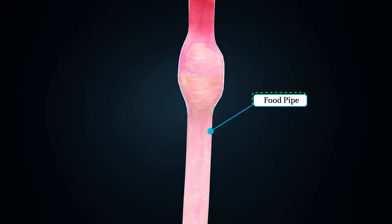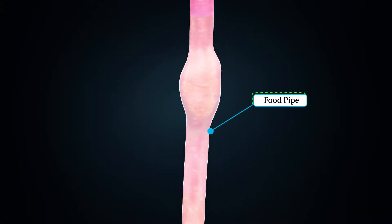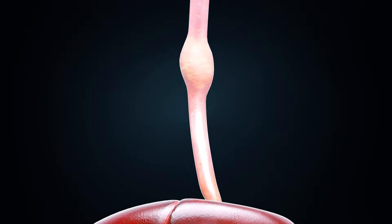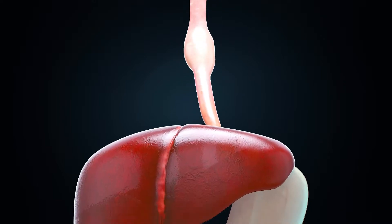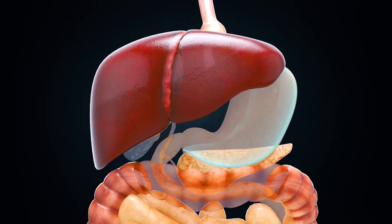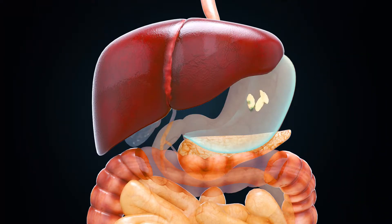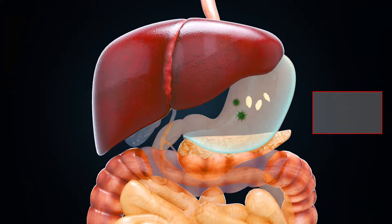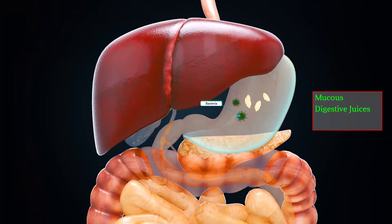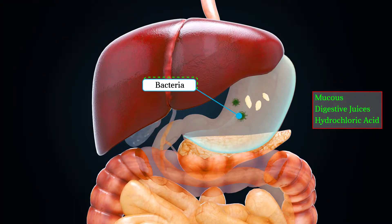The chewed food enters into the food pipe and is then slowly pushed into a bag-like structure called the stomach. The food is churned in the stomach to further break it down. The stomach also secretes mucus, digestive juices, and hydrochloric acid.